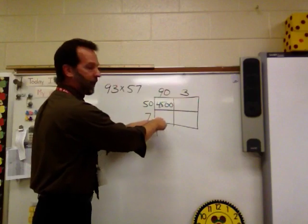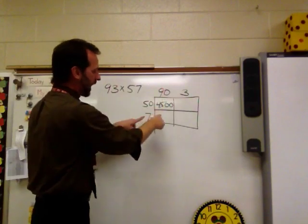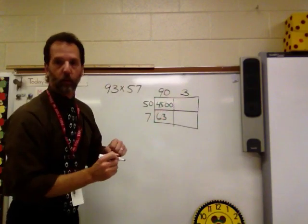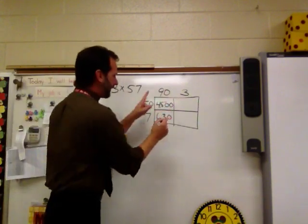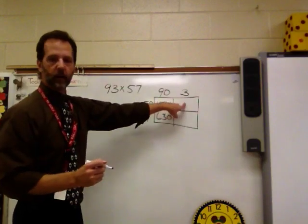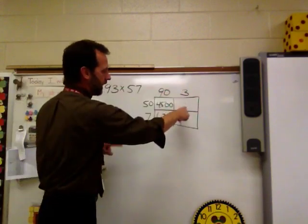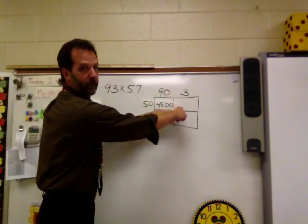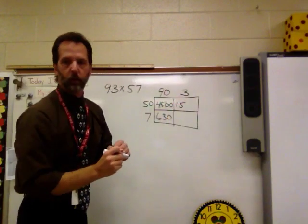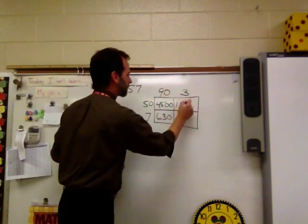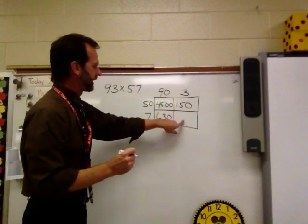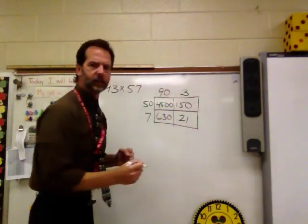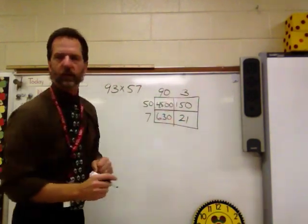Now we're going to do 90 times 7. So we're going to do 9 times 7, which is 63. And how many zeros will we add? 1 from the 90. 90 times 7 is 630. Over here, we're going to do 3 times 50. Remember the 50 comes all the way over. 3 times 5 is 15. How many zeros do we add? 1. 3 times 50 is 150. And then down here, 3 times 7 is 21. And do we add any zeros on that one? No. No zeros with 3 or with 7.